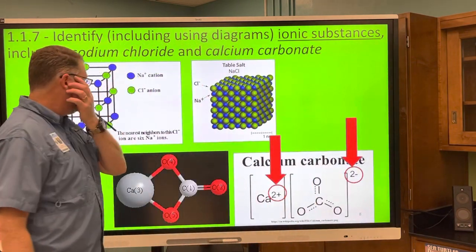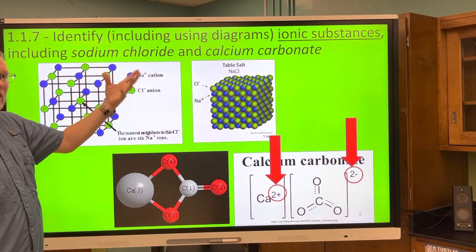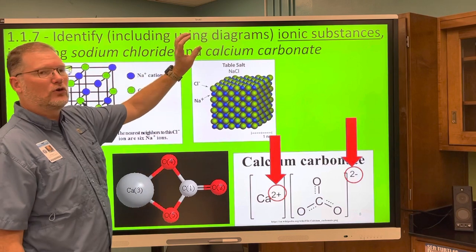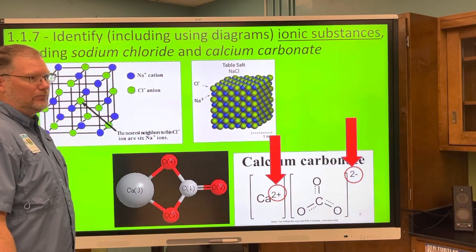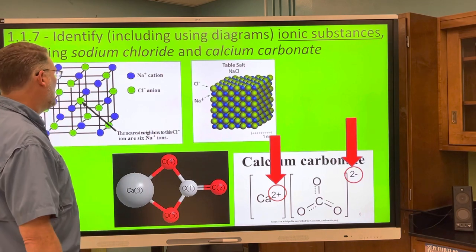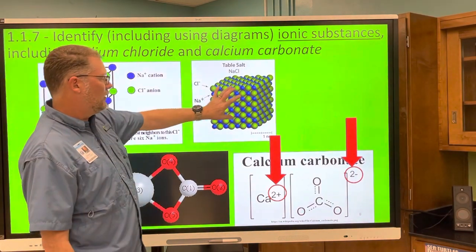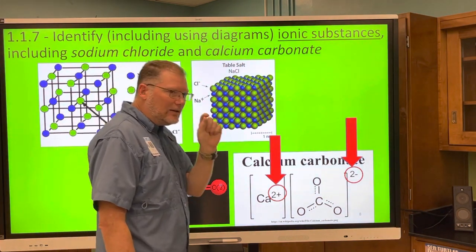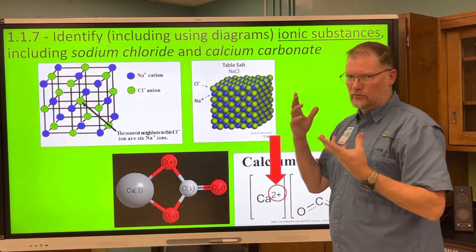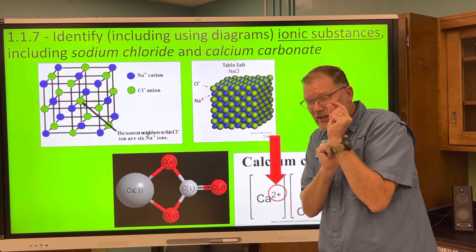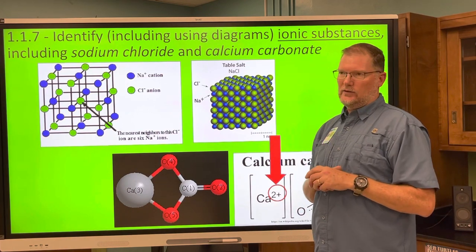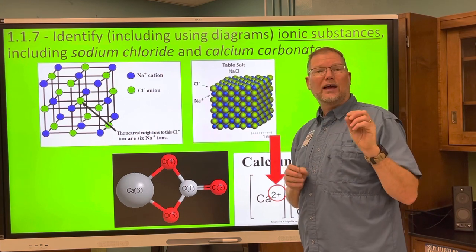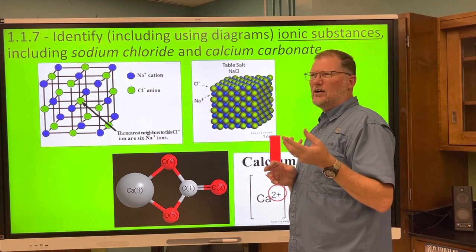You also need to identify ionic compounds — sodium chloride and calcium carbonate — by their chemical structures and names. Sodium chloride in diagram form looks like a blown-up animated version of a little grain of salt — a crystalline structure. We can't actually see sodium chloride atoms; they're too small. But we can see gold atoms — when scientists first achieved that, about 15-20 years ago, it was on the cover of major magazines.